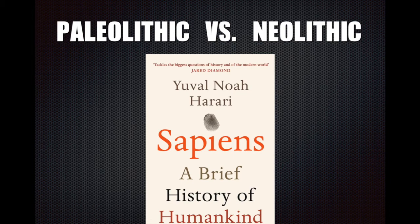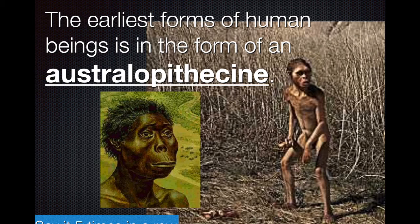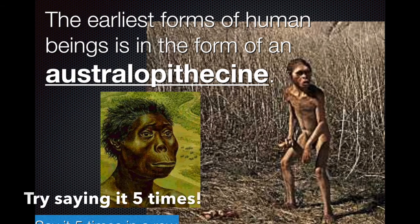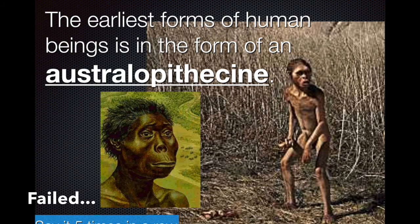Moving on to our ancestors. One of the earliest types of humans were known as Australopithecines. They existed about four to three million years ago, very similar to what would be a modern-day chimpanzee. Males were about five feet tall, females about three feet tall, and their brains were only about one-third the size of Homo sapiens today. Interestingly, we only discovered Australopithecines about 50 years ago, so it's a relatively recent discovery.